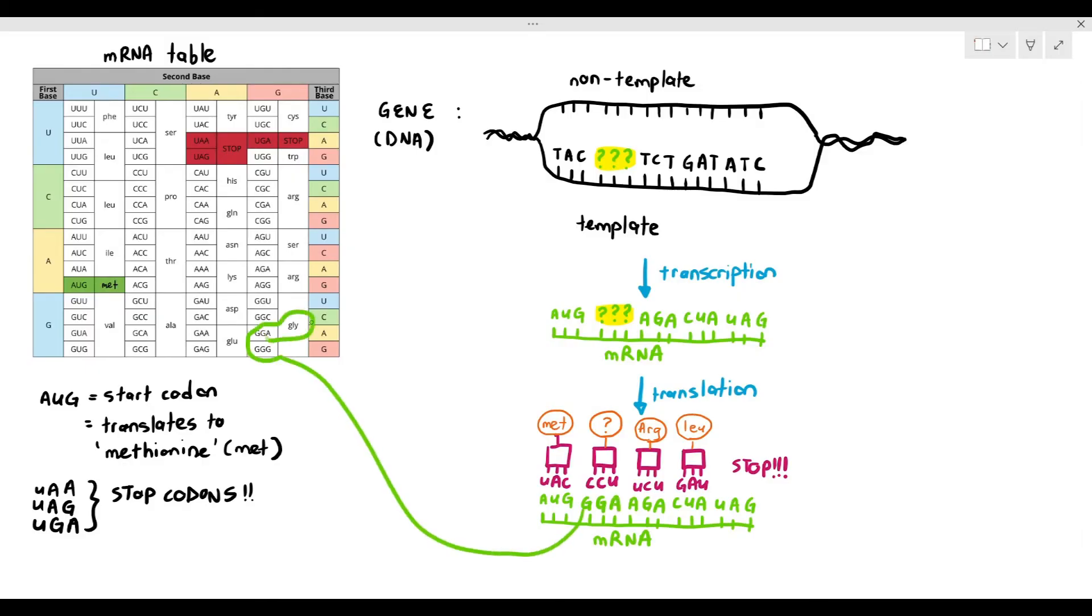And if you look at the table, GGA will translate to an amino acid called glycine, GLY. And if the mRNA is GGA, what will the gene be then? Well, because the mRNA's codon was GGA, so therefore the gene has to be CCT. So by just giving you one information, we can kind of piece out all the other information as well.